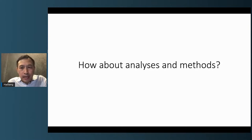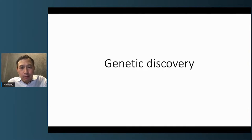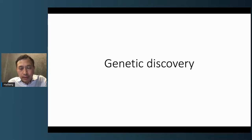But do we have the tools we need to harness all this data and unleash its potential for scientific discoveries? In the remaining time, I'm going to walk you through three categories of methods: genetic discovery, polygenic risk prediction, and fine mapping. I'll be quick on the first category with a review of published studies, and spend more time on the last two categories that my lab has been actively working on recently.